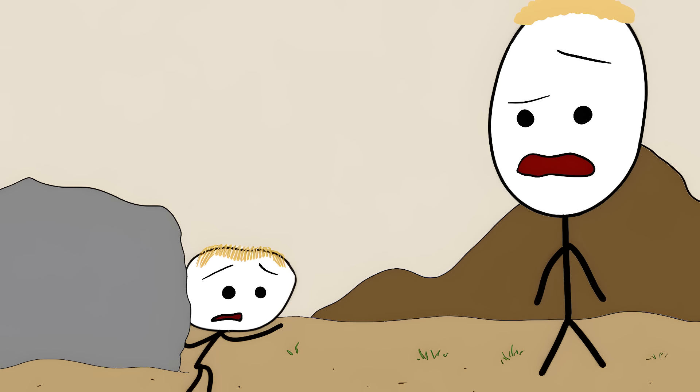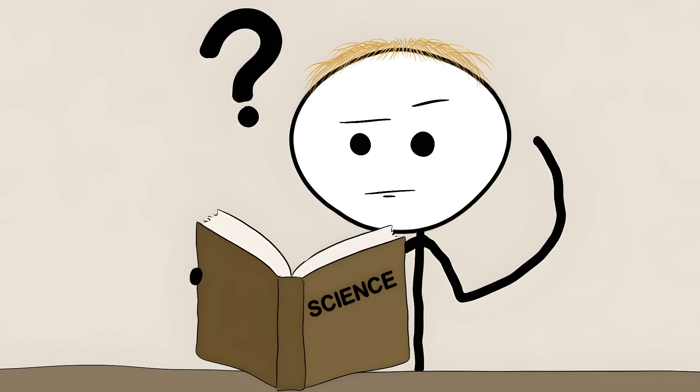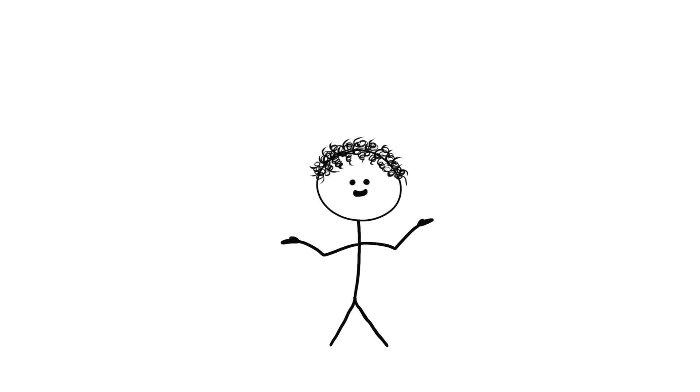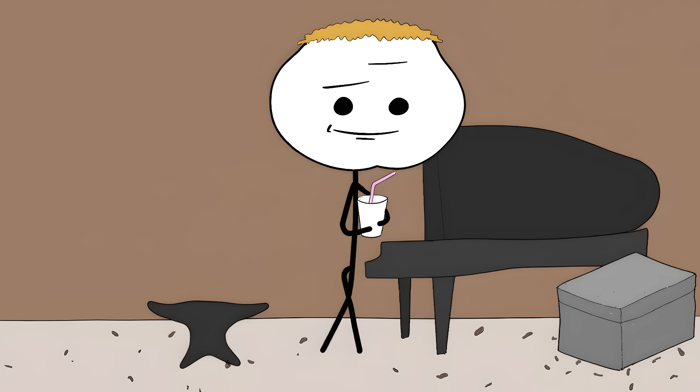Survival of the fittest. This Darwin quote might be the most misunderstood phrase in science. People picture some jacked lion beating up other animals for lunch money. But that's not how it works at all. Being fit just means you're good at not dying in your specific situation.